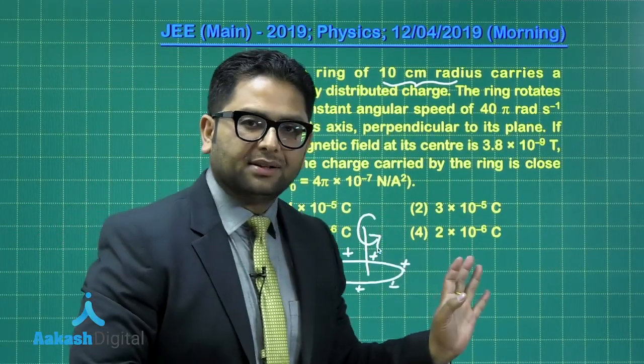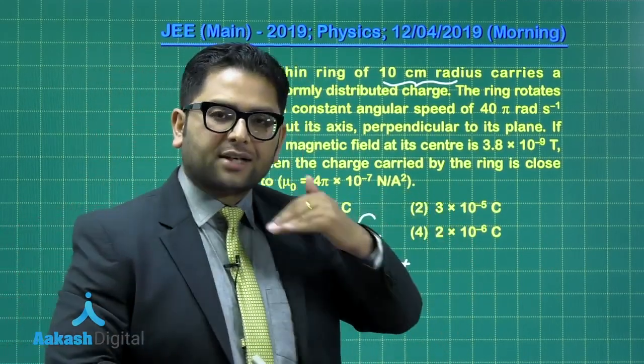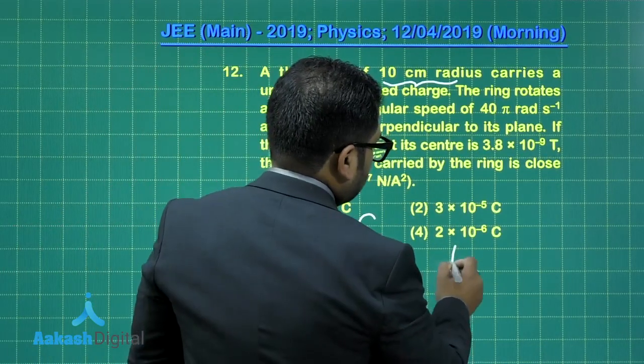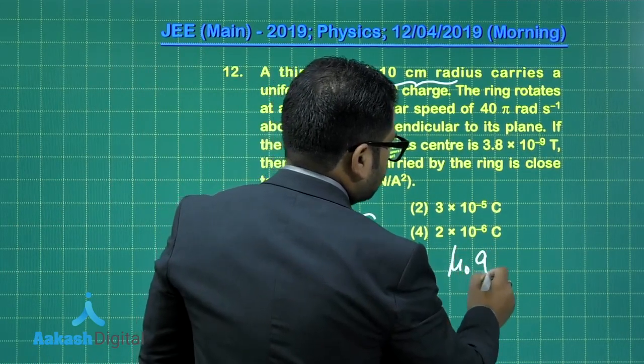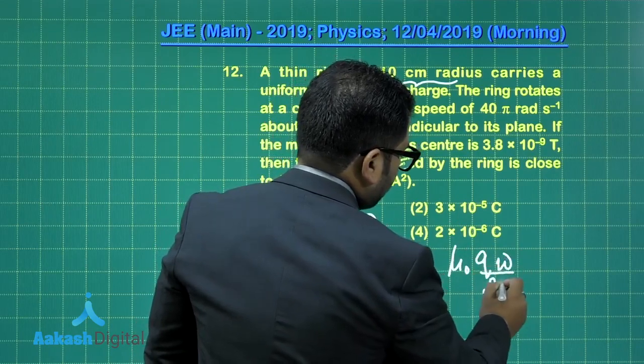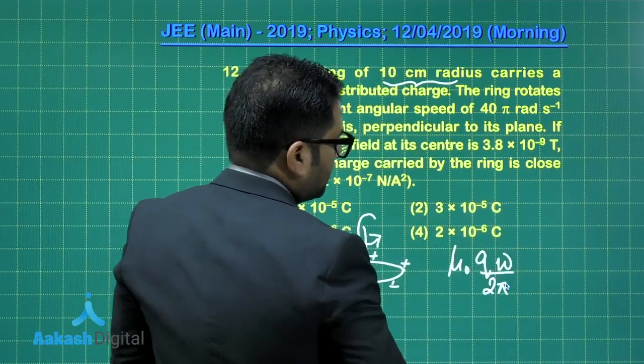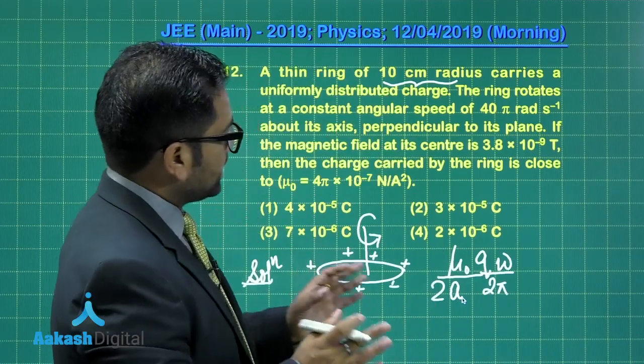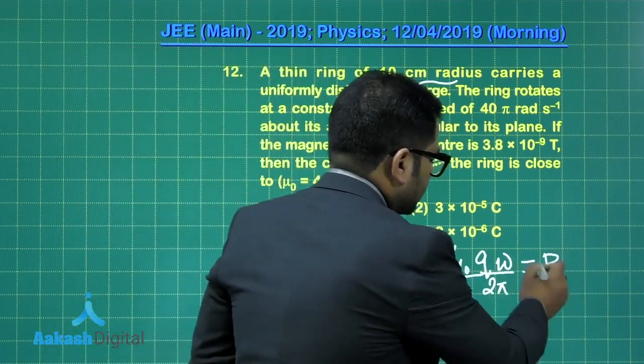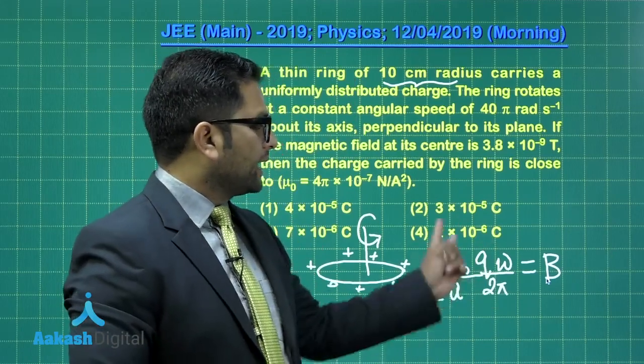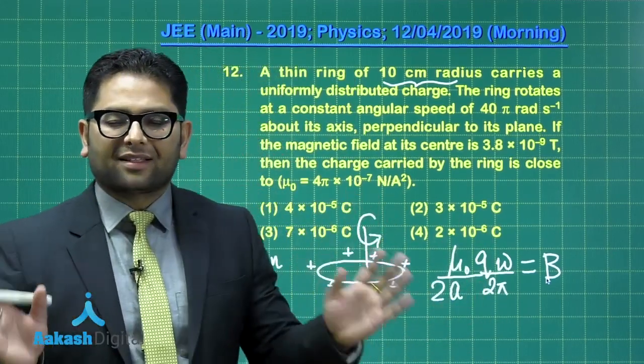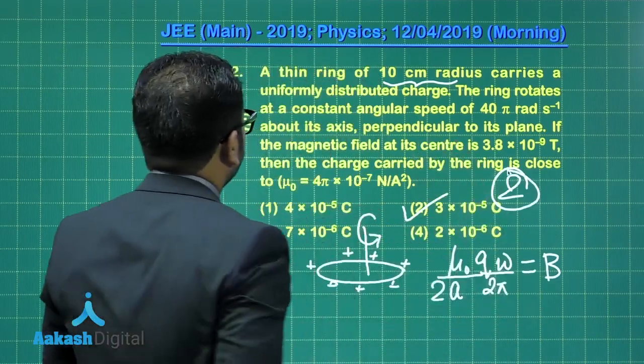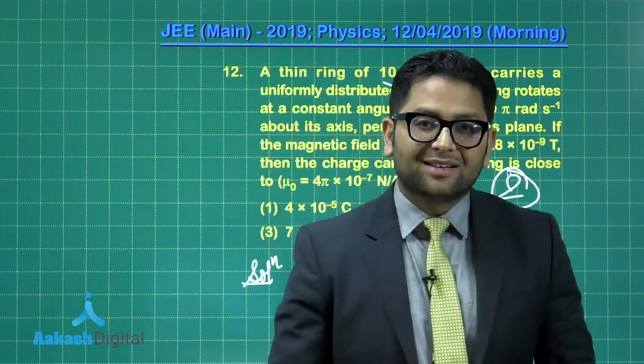That is quite simple. The revolving charge ring can be considered to be a current carrying ring. How much would be the magnetic field? Mu naught I - I is q omega by 2 pi - divided by 2 of the radius. Let me call the radius by A. This is the magnetic field at the center: mu naught I by 2A and I being this. It's a very regular feature thing that we discuss in class. This will give us option number 2 as the correct one. Let's now move to the 13th question.